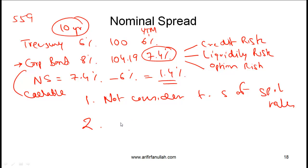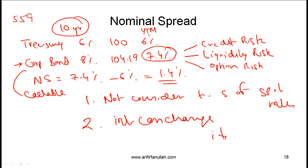The second limitation is that we are not considering the fact that interest rates can change and hence cash flows can change. Since this is a callable bond, it is possible that interest rates go down and the issuer calls the bond back, meaning the investor will not receive coupon payments for the full 10-year period. When we take the nominal spread, we simply ignore the fact that cash flows might not necessarily continue until maturity.